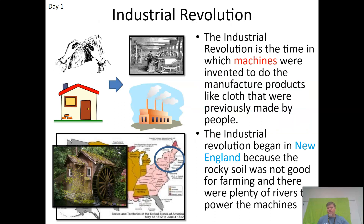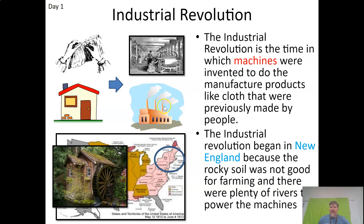What is the Industrial Revolution? It's a time when machines are invented to manufacture products. We use water power and steam power, once coal and the steam engine are invented and become more effective. What happens is it goes from cottage industry or home production to factory production — the factory system. From the home or cottage to the factory — that's the change that happens.